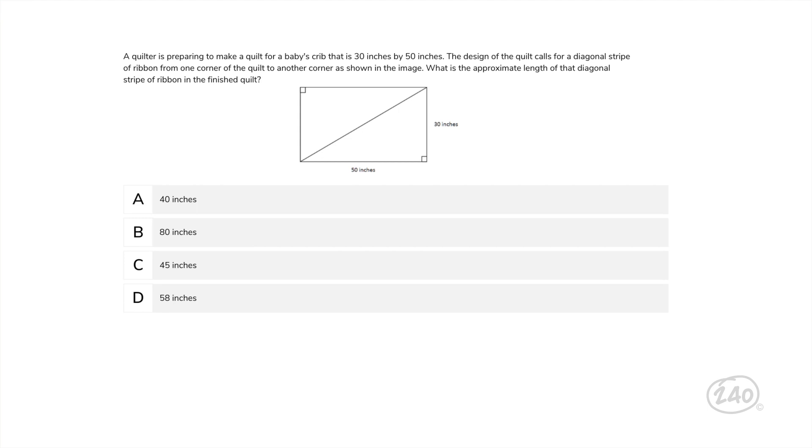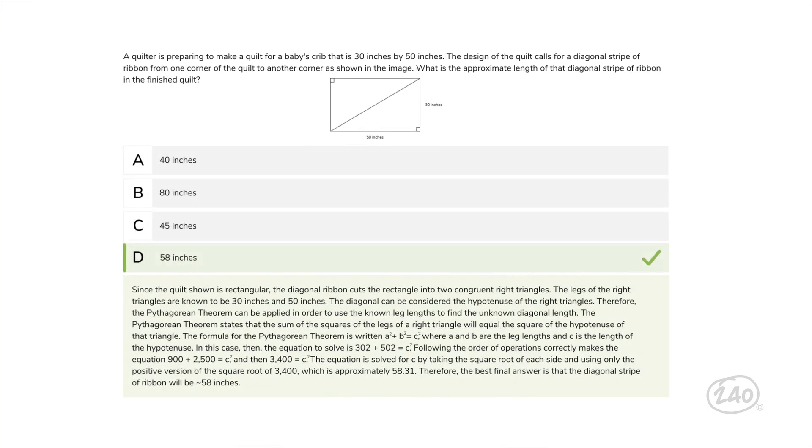All right, shouts out to my buddy Pythagoras. He's going to help us with this one. I can see an A that we're going to square, there's a B that we're going to square, and that results in a C that then we find the square root of. That leaves us with this as our best answer.